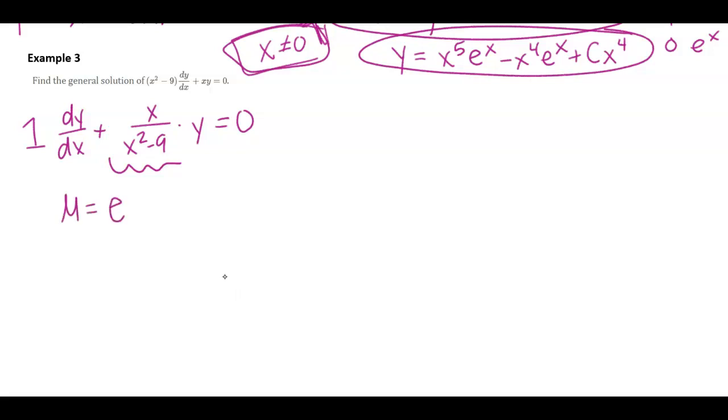And so mu is e to the integral of this here. If you notice the derivative of the bottom, 2x is kind of here in the top. Like if I had a 2 here and then maybe a 1 half just to keep equality there, then I could say that this is 1 half natural log of x squared minus 9. Now, x squared minus 9 cannot be equal to 0, so x cannot be equal to plus or minus 3.